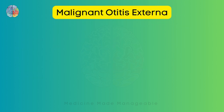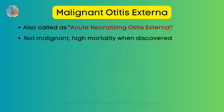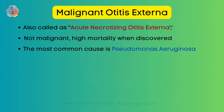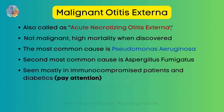The second disease is Malignant Otitis Externa, also called Acute Necrotizing Otitis Externa. Despite the name, it is not malignant — it was named so because of a very high rate of mortality when first discovered. The most common cause is Pseudomonas aeruginosa, the same Pseudomonas seen in diffuse AOE. The second most common cause is Aspergillus fumigatus, a fungus. It is most commonly seen in immunocompromised patients and people suffering from diabetes.